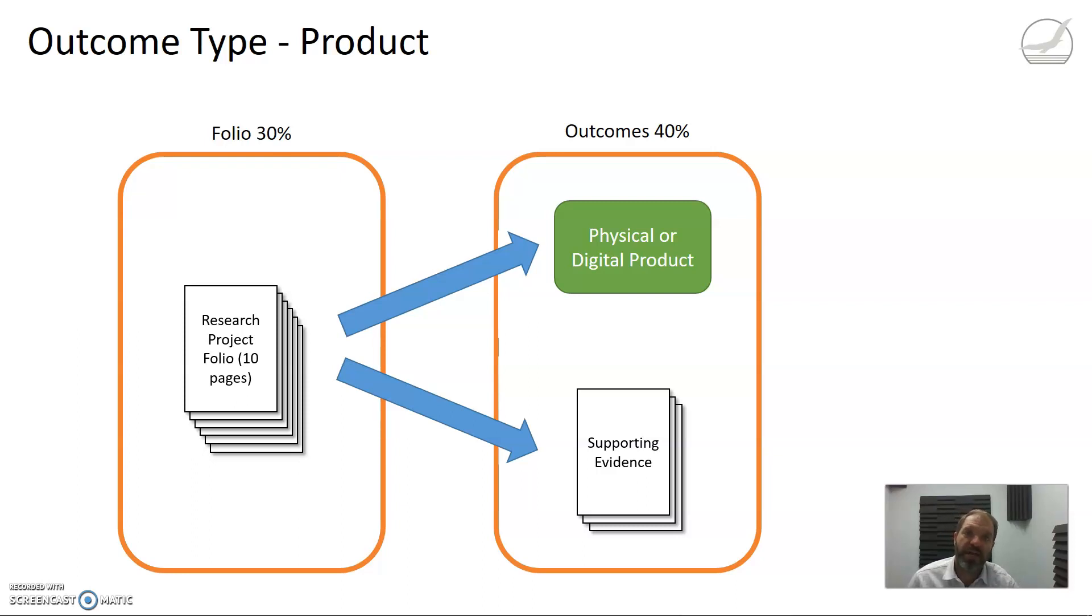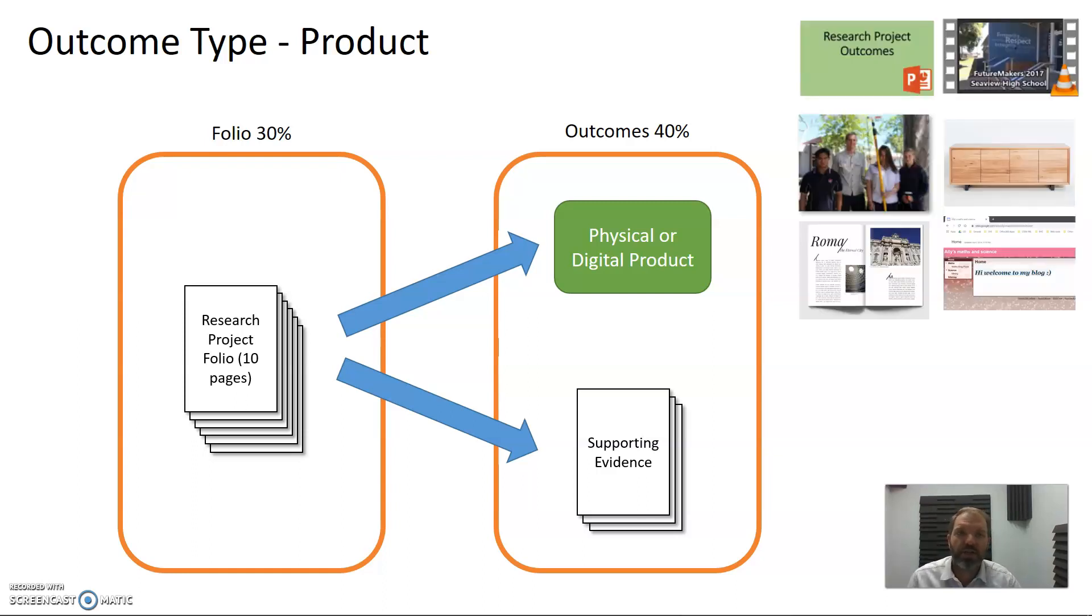Whether it was the camera techniques that you used or the manufacturing techniques—for instance, your product might be a series of slides explaining a particular topic with a narration that goes through that, or some sort of video or film production or music video. Again, your supporting evidence would support some of the choices you made around that.